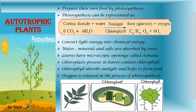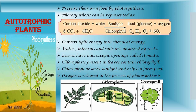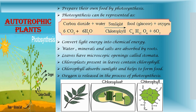Plants prepare their own food by the process of photosynthesis. In photosynthesis, plants make their food in leaves with the help of sunlight and chlorophyll, using water and nutrients from the soil and carbon dioxide from the air. The process of photosynthesis can be represented by the following equation.